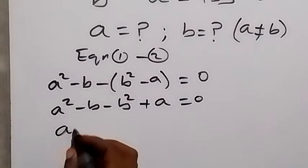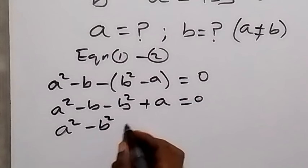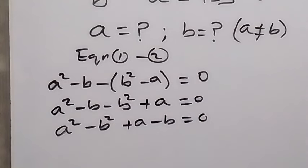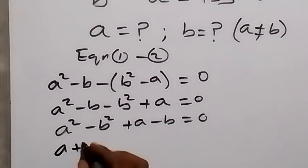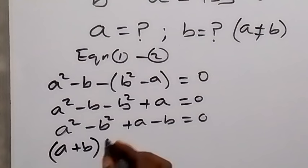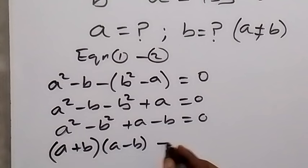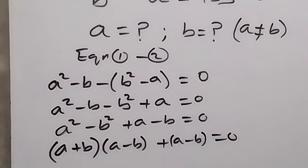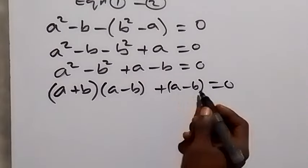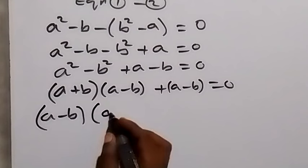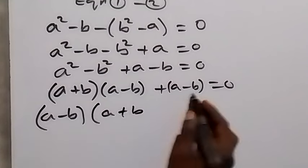Now let's bring the squares together: a squared minus b squared, then plus a minus b equals 0. We can factorize using the difference of two squares, so this gives us (a plus b)(a minus b), then plus (a minus b) equals 0. We factorize (a minus b) out, so we have (a minus b) times (a plus b plus 1) equals 0.